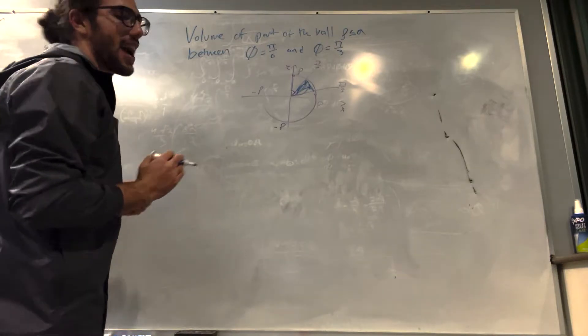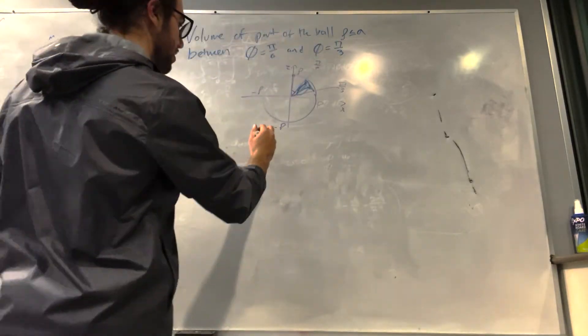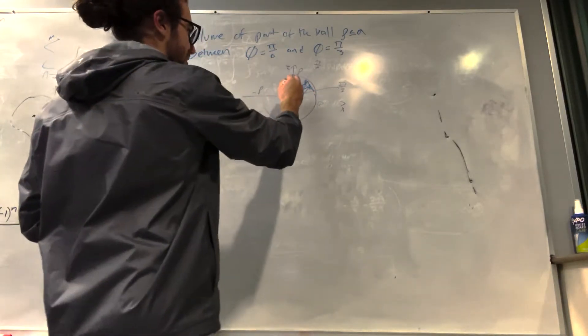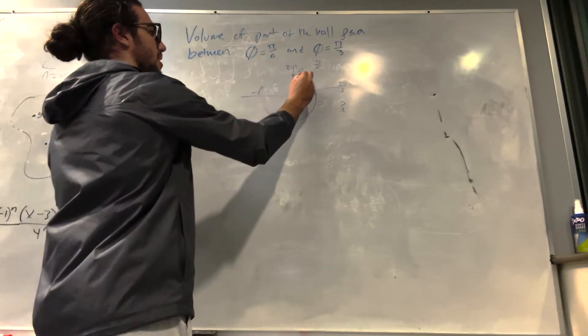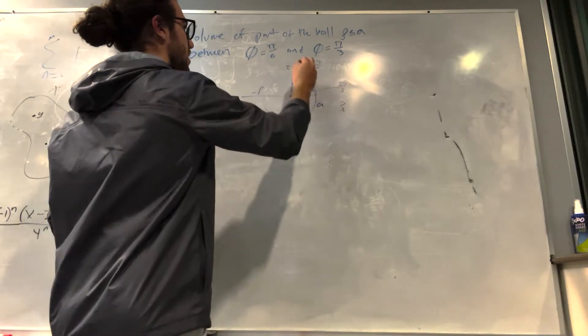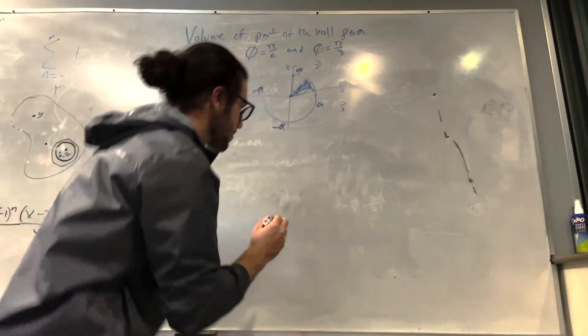So how do we do this? Well, we actually have everything we need to set up the integral. This is a pretty easy question in total. So that means that rho goes from 0 here. And it's like you start here and you go out. That goes to a.